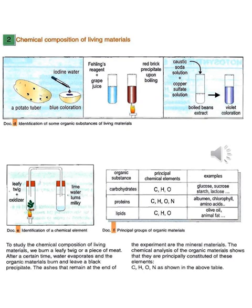Document F shows the principal groups of organic materials produced by these plants: carbohydrates, proteins, and lipids. Products produced by green plants include glucose, starch, lactose, albumin, chlorophyll, amino acids, olive oil, and other substances. In conclusion, these are the organic products produced by green plants.